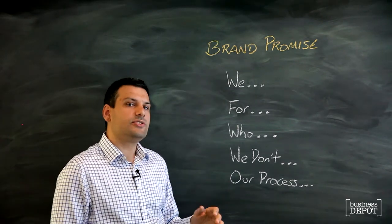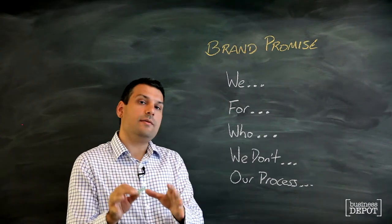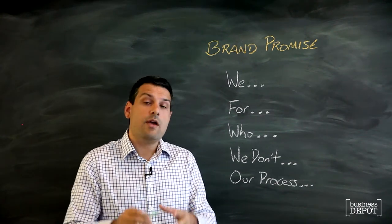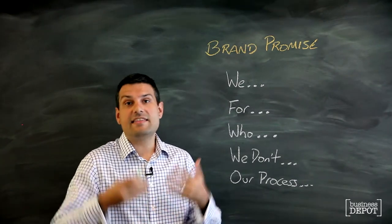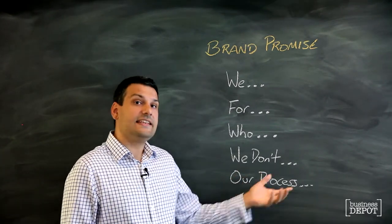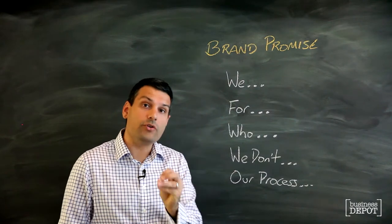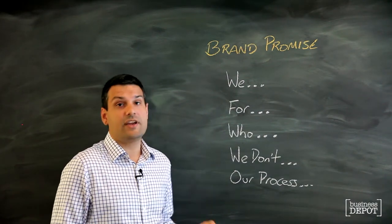Question four is a little bit optional. It's important for you and your team to understand what it is you don't do. Because often, it's very tempting to say that we can do anything for anybody. Actually articulating the things that you don't do helps focus your brand promise, and it's that focus that creates cut-through.